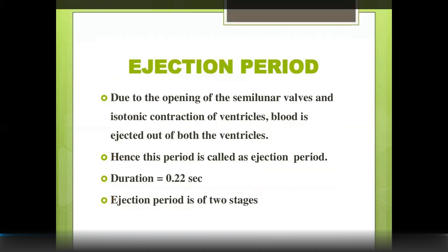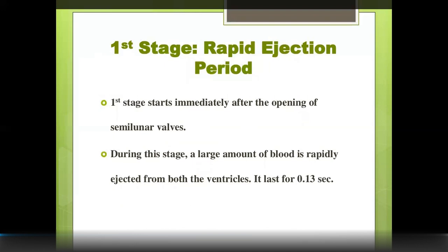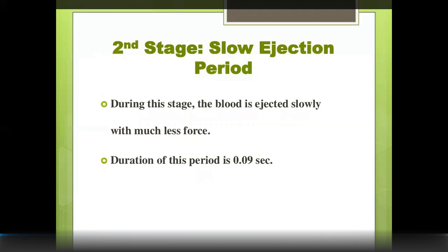Following isovolumetric contraction is the ejection period, lasting 0.22 seconds total. The semilunar valves open and blood is ejected from the ventricles into the aorta and pulmonary artery. The ejection period has two stages: rapid ejection (0.13 seconds), where a large amount of blood is forcefully ejected, and slow ejection (0.09 seconds).